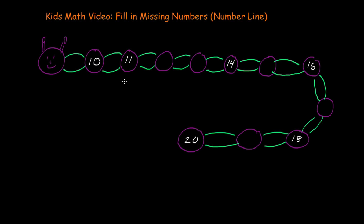We have a little caterpillar here, and as you can see, there are some numbers inside this caterpillar. We can see the number 10, the number 11, the number 14, the number 16, the number 18, and the number 20. And then there are some circles in this caterpillar that are not filled in — they're blank.